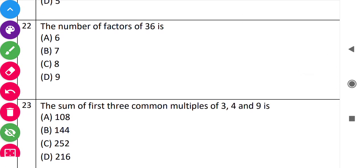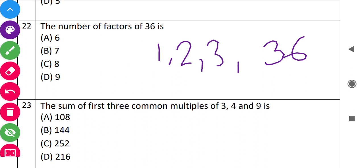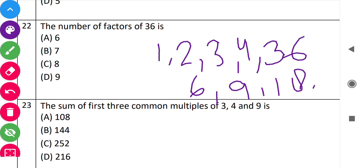Next: 'Number of factors of 36.' The factors of 36 are: 1, 2, 3, 4, 6, 9, 12, 18, and 36. Counting them: 1, 2, 3, 4, 5, 6, 7, 8, 9 — so there are 9 factors of 36.